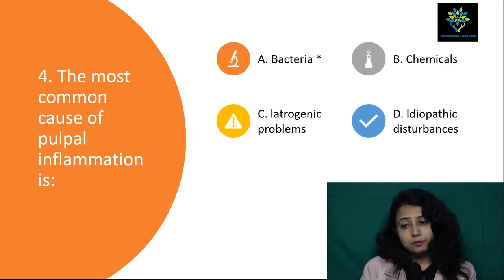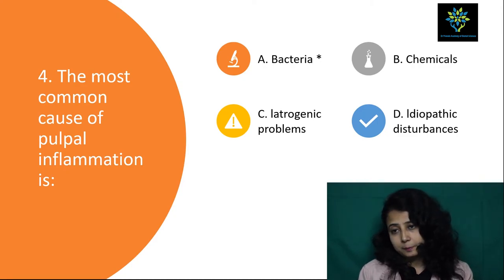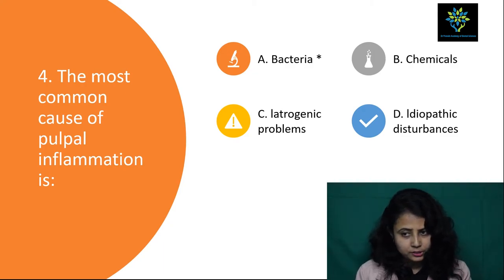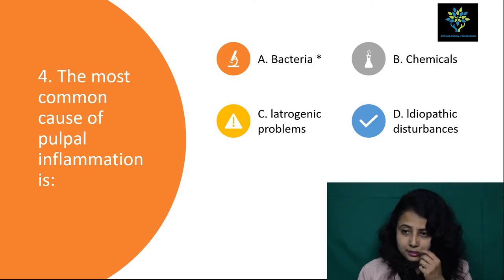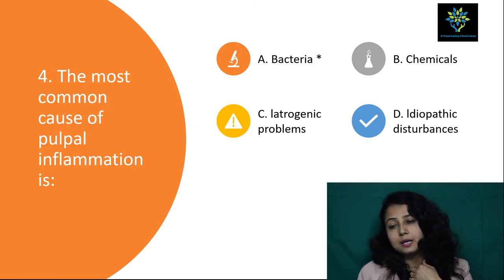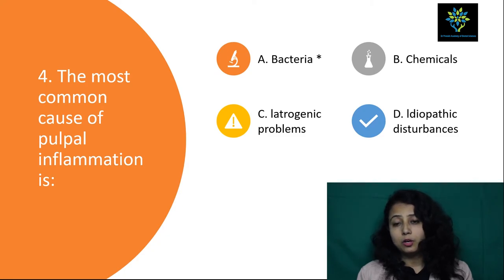Then the most common cause of pulpal inflammation — options are: No. 1 bacteria, option B chemicals, option C iatrogenic problems, option D idiopathic disturbances. Idiopathic disturbances sometimes may not cause pulpal inflammation. Iatrogenic problems do not always cause pulpal inflammation. Chemicals — some chemicals are actually root canal disinfectants, so that option also we cannot take. What we can take is bacteria. Bacteria is the reason for pulpal inflammation, so the most common cause of pulpal inflammation is option A — bacteria.